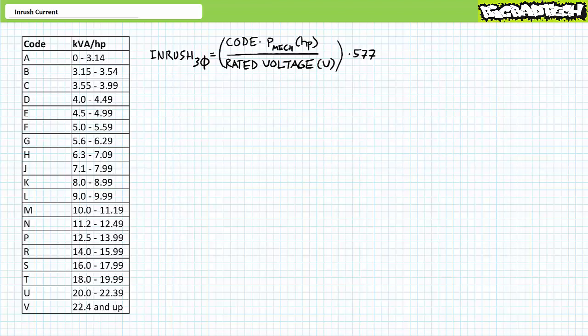For this reason, reduced voltage starting techniques like primary resistor reduced voltage starters, part winding reduced voltage starters, Y-start delta run reduced voltage starters, and soft starters among other techniques are employed to reduce inrush current and mitigate its negative effects. Lacking these techniques, a technician must at times calculate the anticipated inrush using the information available on the motor nameplate, so that wire size and instantaneous demand in the electrical distribution system can be predicted in advance.